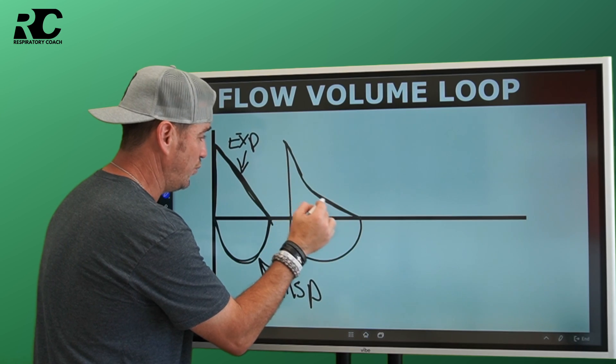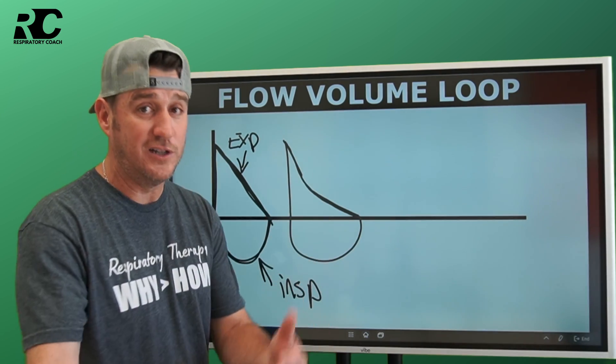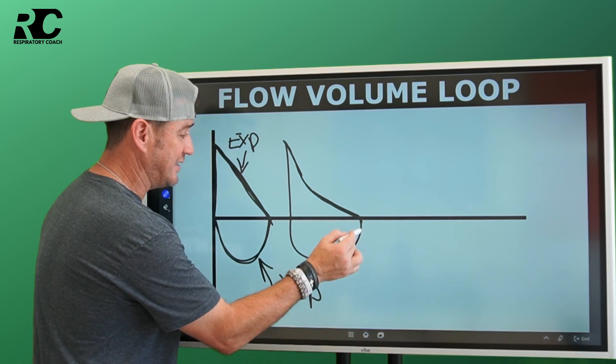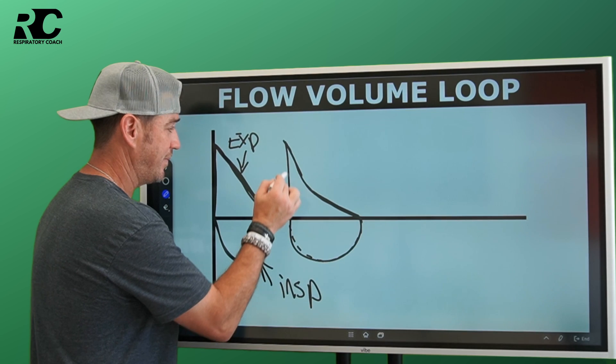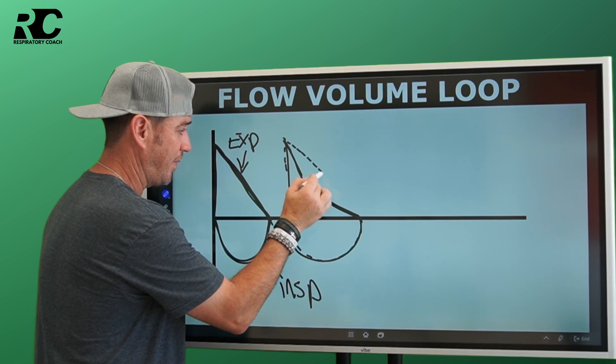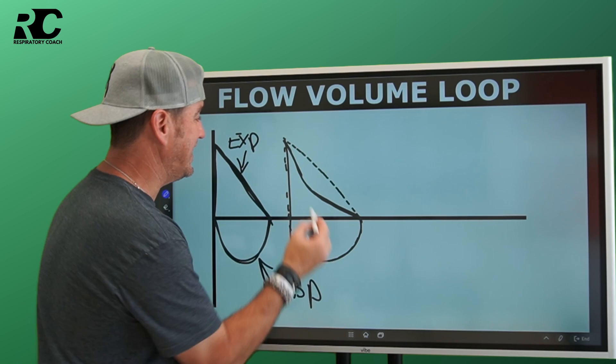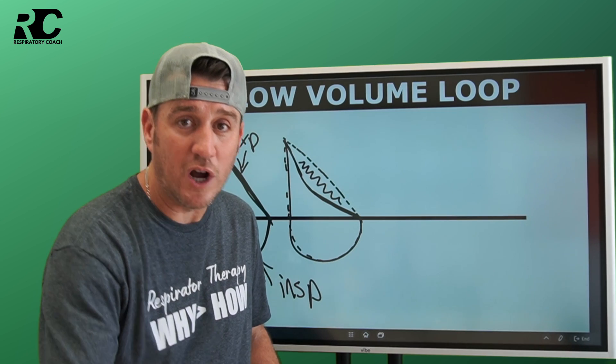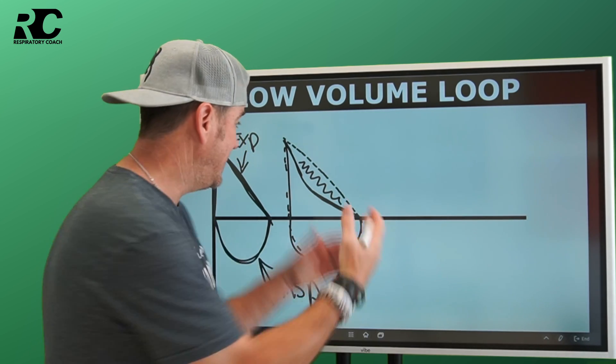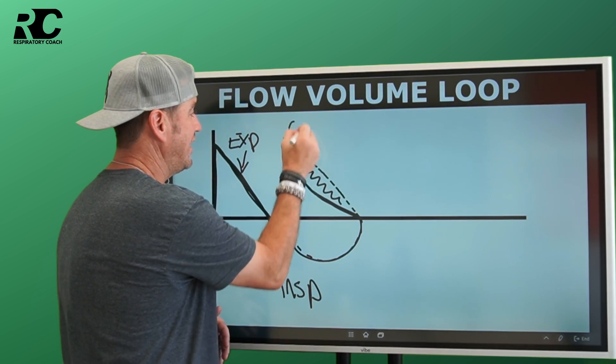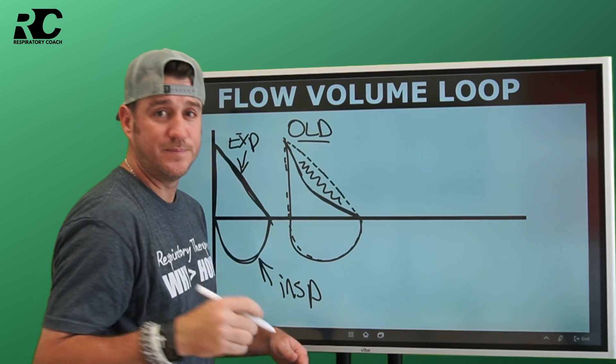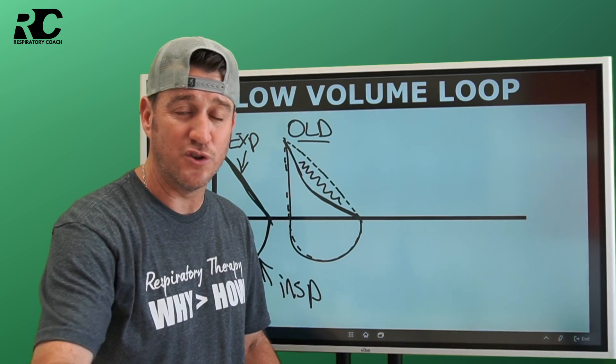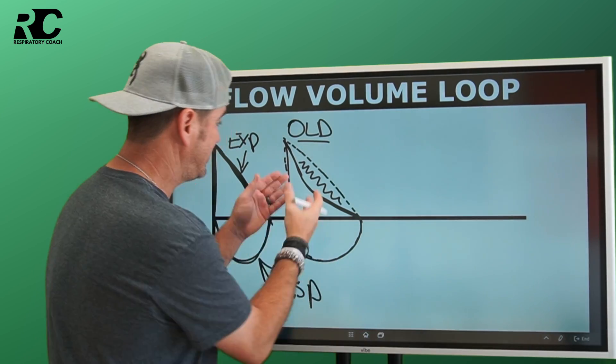This is what their flow-volume loop might look like. If I was to draw a normal one over this, it would look like this. And what we see is that the difference in all of this, that is the obstruction. This right here says OLD. When I say OLD, I mean obstructive lung disease. You know you're thinking about all of your C-BABES.